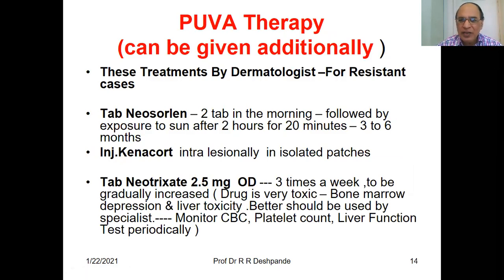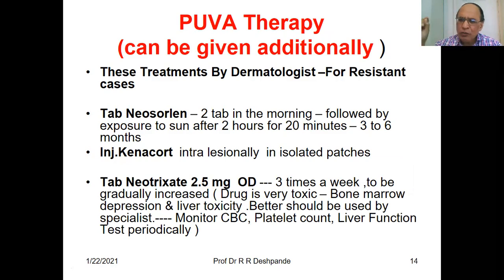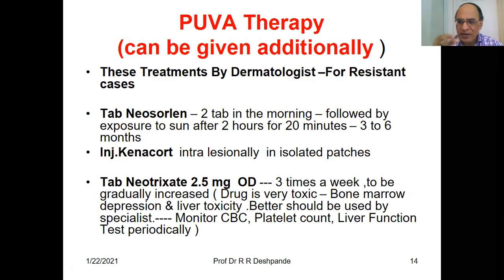These treatments are usually given by a dermatologist for resistant cases. Tablet Neosuraline — two tablets in the morning followed by exposure to the sun or UV rays after two hours, for 20 minutes, done consecutively for three to six months. Injection Kenacort can be given intra-lesionally inside isolated patches. If there are separate isolated patches, you can try injection Kenacort at that particular lesion, but you have to learn the technique.